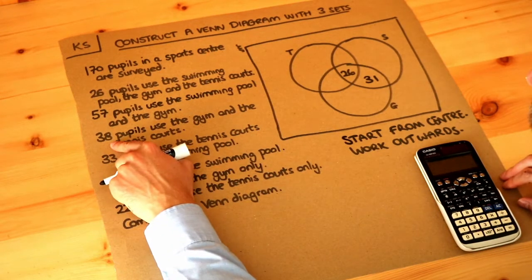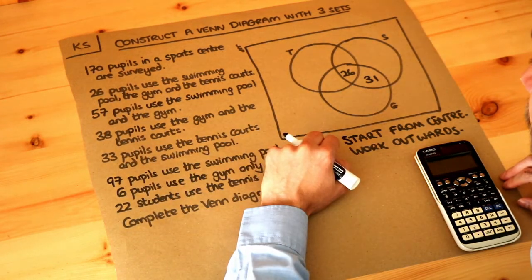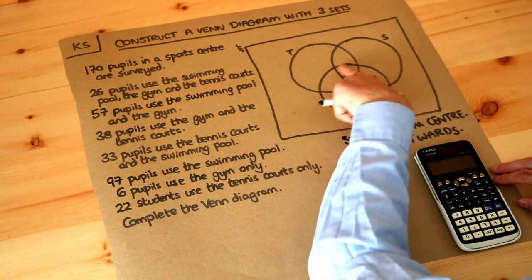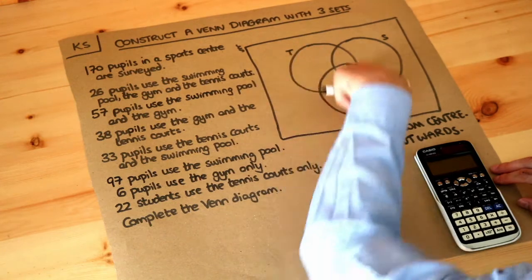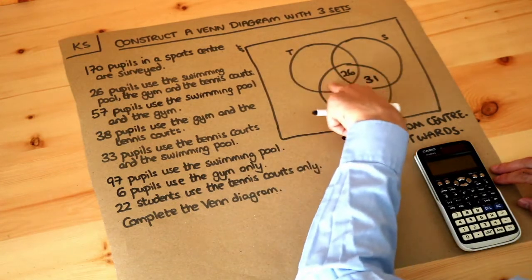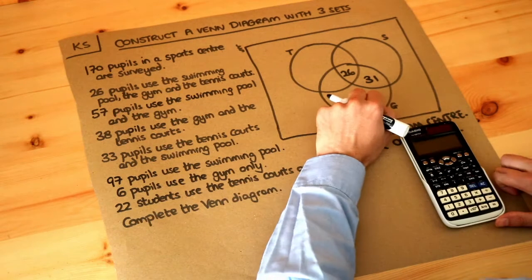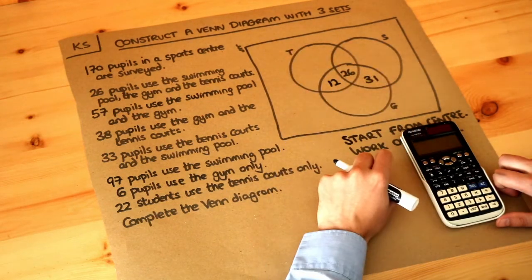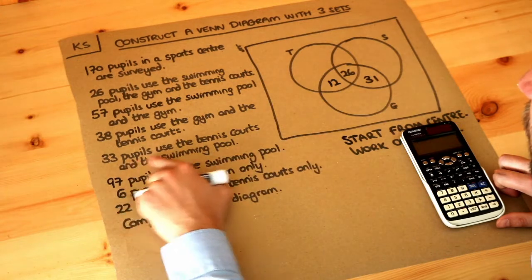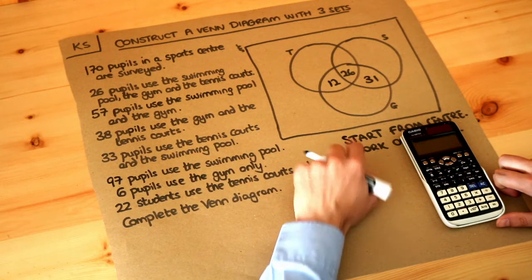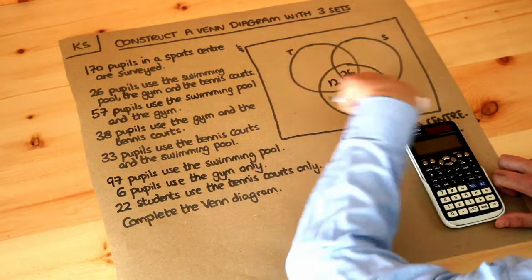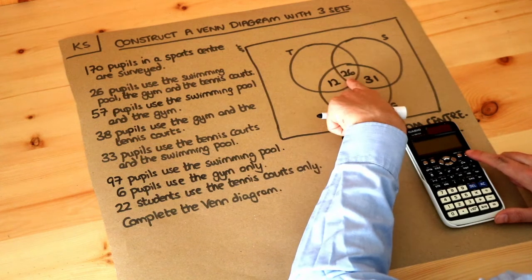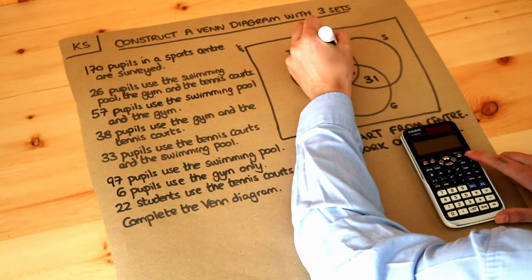Next, 38 pupils use the gym and the tennis courts. The overlap of the G and T circles adds up to 38, so we do 38 minus 26 to get 12 in that region. Finally, 33 pupils use the swimming pool and the tennis courts, so 33 minus 26 gives us 7 in that overlap region.